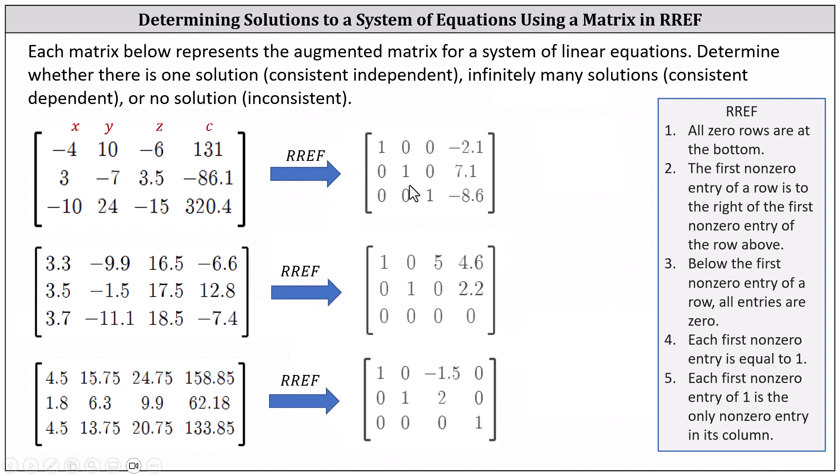Let's focus on the first augmented matrix in reduced row echelon form. The important thing to remember is that each row represents an equation. For example, this first row represents the equation, one x equals negative 2.1, or x equals negative 2.1.